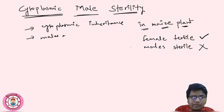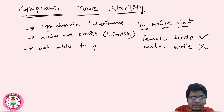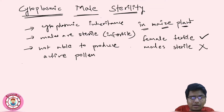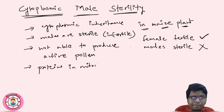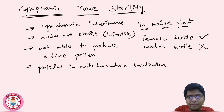Males are sterile, meaning infertile — not able to produce active pollen. This is because there is a mutation in one of the proteins in the mitochondria. That protein is mutated.